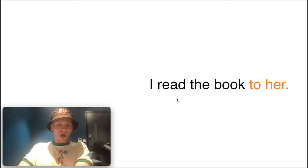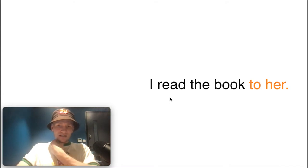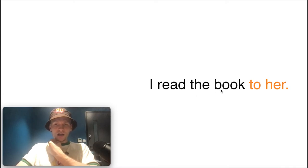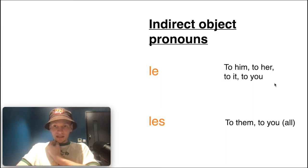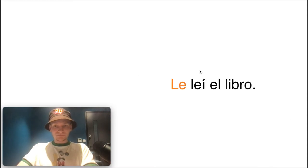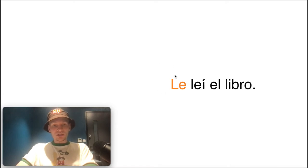Next example: 'I read the book to her.' So: leí el libro. We're not replacing 'the book' with 'it' here — we want 'to her.' Looking at our tables: direct object for her (feminine) would be la, but indirect 'to her' gives us only one option — le. So: le leí el libro — 'I read the book to her' (or to him). Context is important, but remember le goes before the verb conjugation.